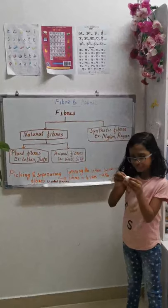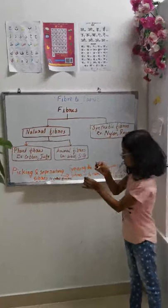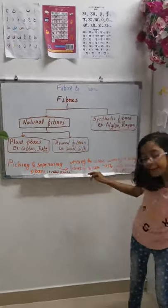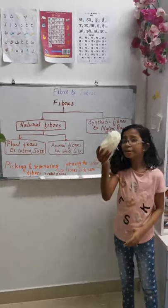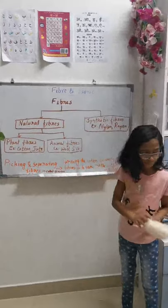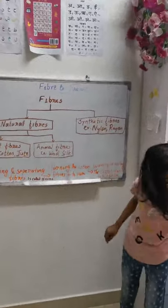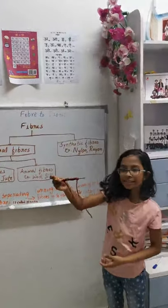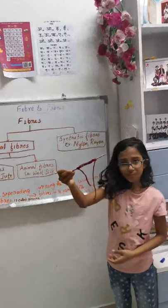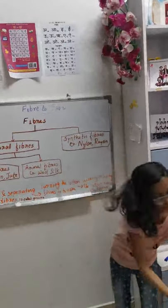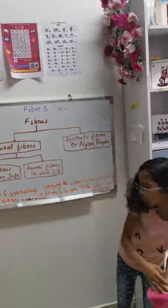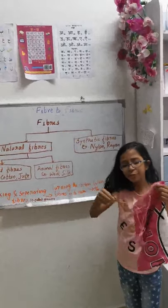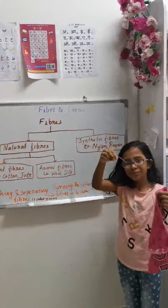Picking and separating the cotton fiber is called ginning. Then the cotton fiber is turned into yarn. After that comes weaving or knitting. I made this knitting myself. The yarn fiber is then woven into fabric.